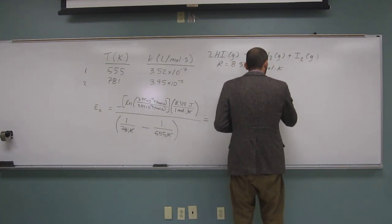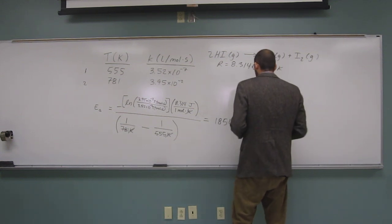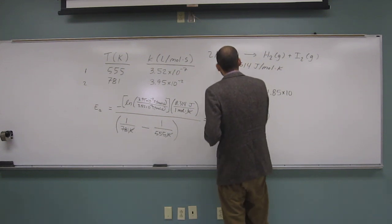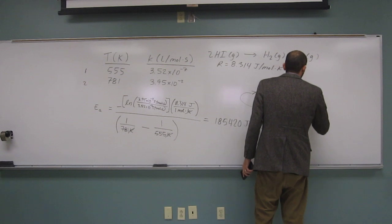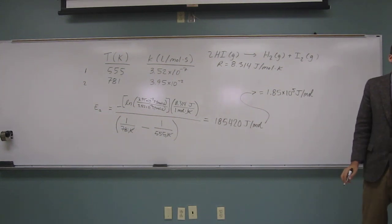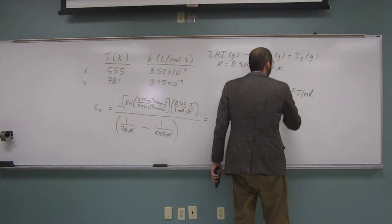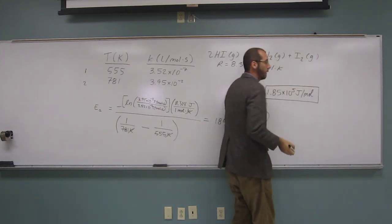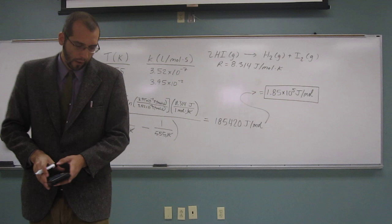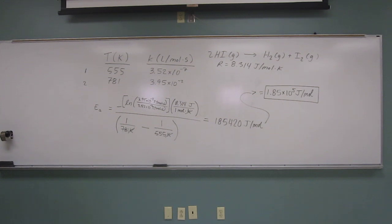So it's going to be 1.85 times 10 to the 5th joules per mole. And if you wanted to put it into kilojoules, you could divide the thing by 1,000 and get the number of kilojoules. Oftentimes energy units are written in kilojoules, but I don't think this one asks us what to put it in. Are there any questions on this one? Okay. Cool.